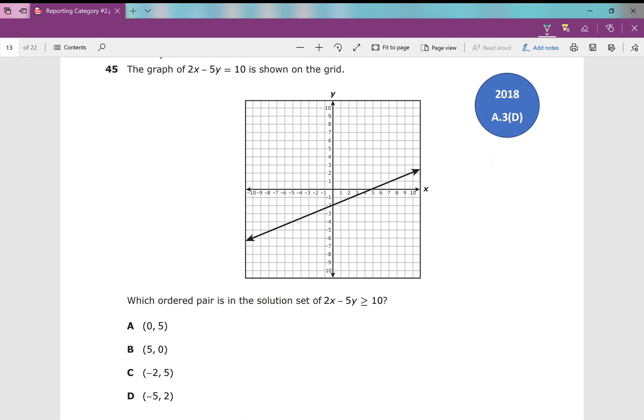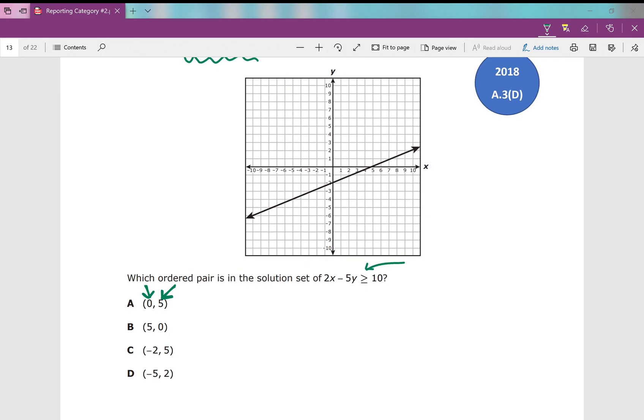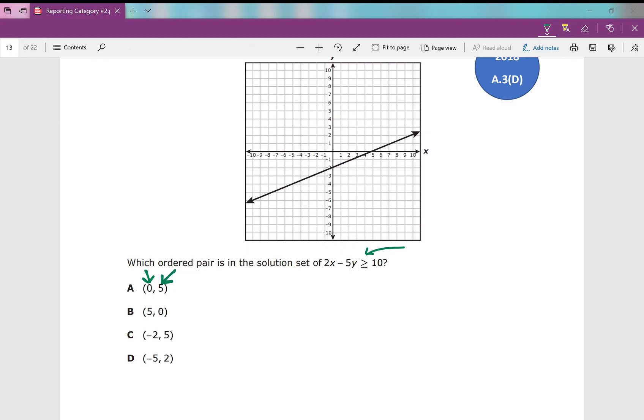Number 45: The graph of 2x minus 5y equals 10 is shown on the grid. Which ordered pair is in the solution set of 2x minus 5y is greater than or equal to 10? So this line is just this up here. The question is asking you about this inequality. So one of the things that you can do is this is a value for x and this is a value for y. You can plug in 0 for x and 5 for y and see if you get a true statement. Meaning what's on this side, is it greater than or equal to what's on this side? If it is, then that's your answer. So that's a good test taking strategy. You can also solve for y and graph it. If you want to pause the video and do that now, that would be a great idea.